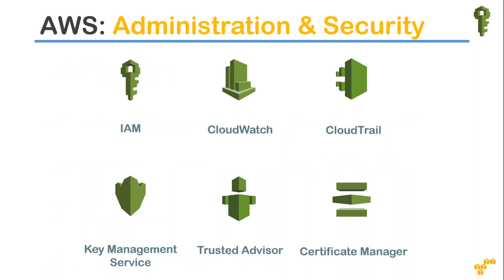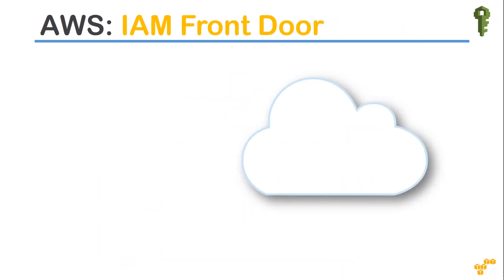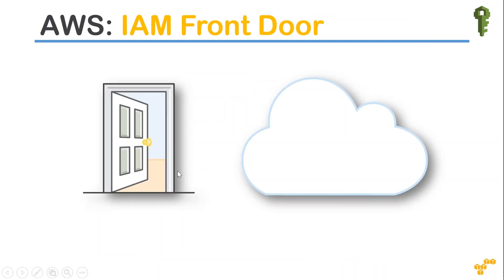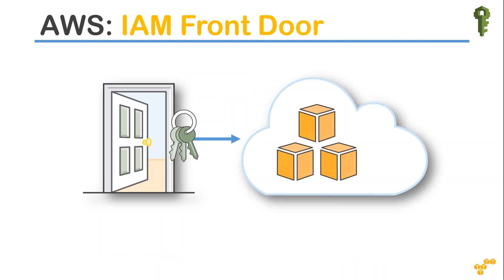When talking about administration and security, there are a lot of services offered by Amazon, but our focus area is going to be on IAM only right now. Think of IAM as your front door to the cloud. If you want to access any resources or services in AWS, IAM will provide you the access keys. Using those access keys, you can configure admin-level access, user-level access, or admin-level access for a particular service alone.